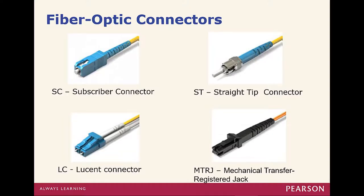Now we have to think about how we connect them. Common connections for fiber optic include SC, which is more like a square; ST, which is like a BNC but more of a twist; LC; and MTRJ, or Mechanical Transfer Registered Jack. SC, ST, and LC are very common. They don't come as an individual wire — they come as pairs. Our LC has two strands of fiber. SC and ST also always come as two — one for sending, one for receiving.